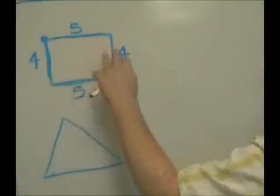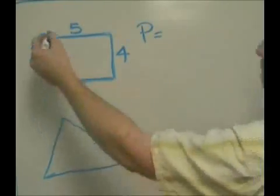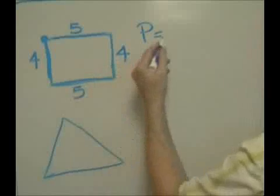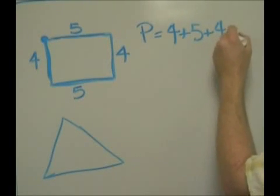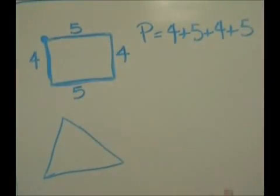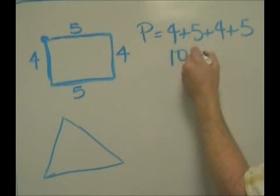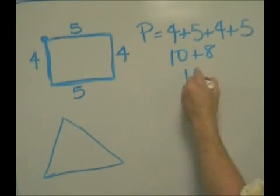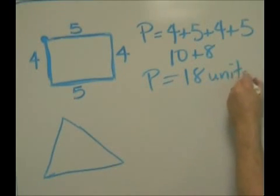So what would be the perimeter of this rectangle? Well, you're going to add all the lengths. So it's going to be four plus five plus four plus five. Since addition is commutative, you can move the numbers around. Five and five is ten, four and four is eight. So we get a perimeter of eighteen units for this figure.